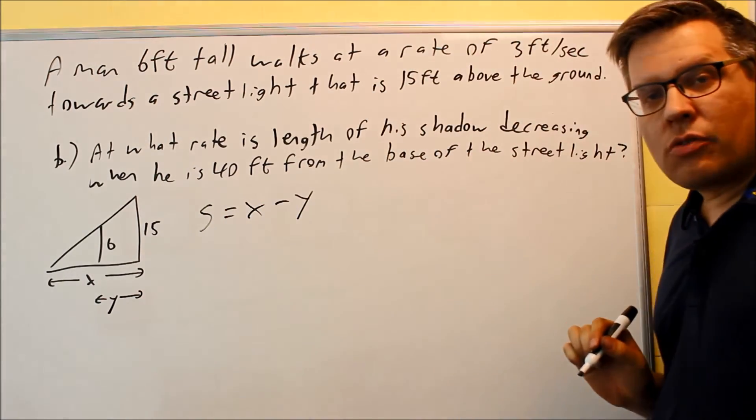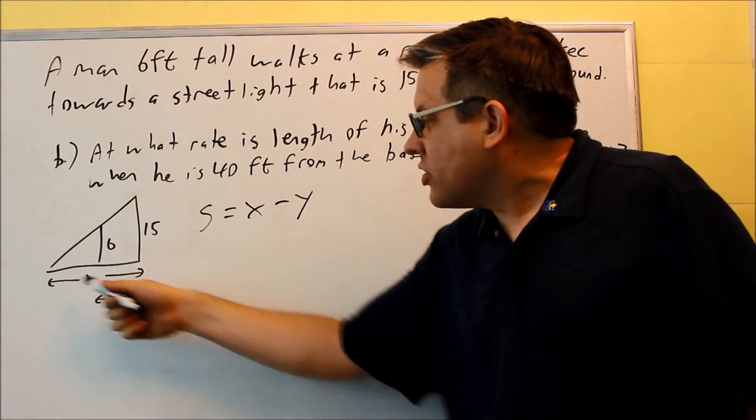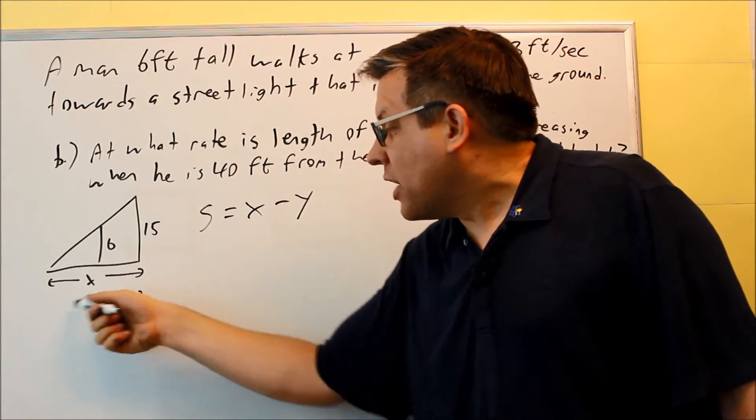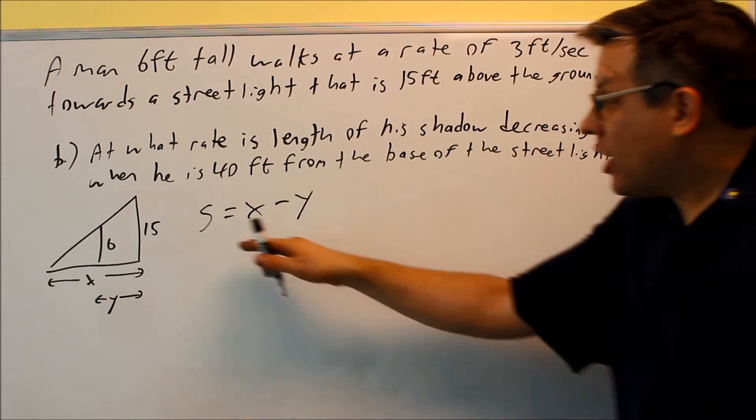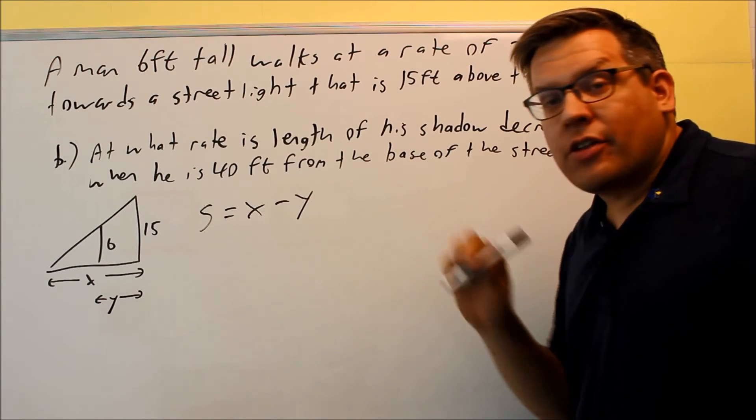The s, length of the man's shadow here, is again the x minus the y. We'll give you this space right here. We're going to call that s. So that way we have something that we can apply the derivative to.